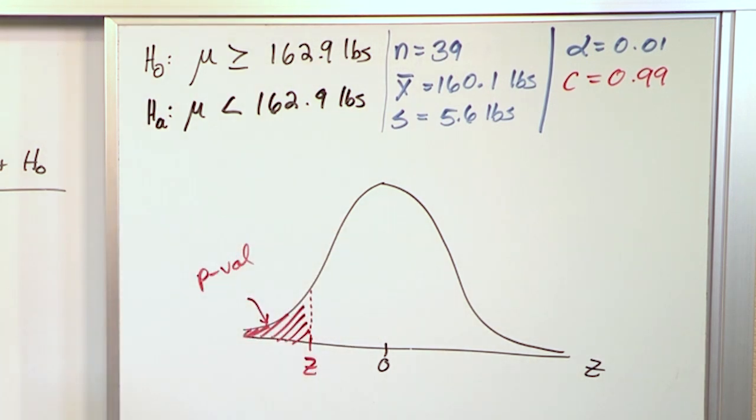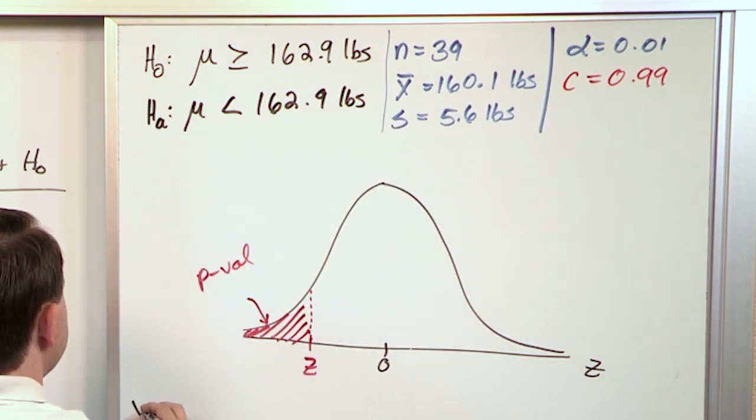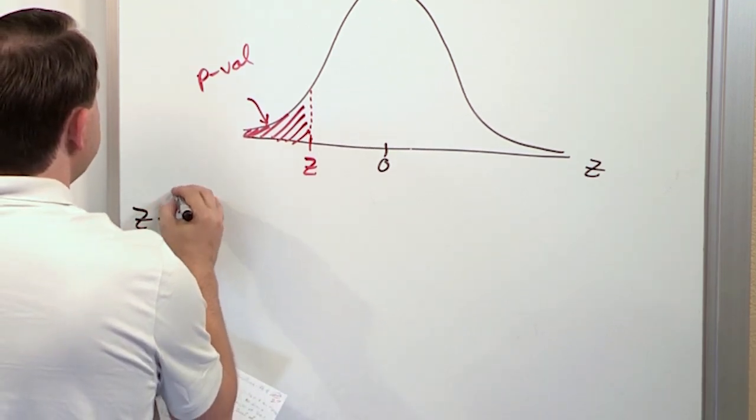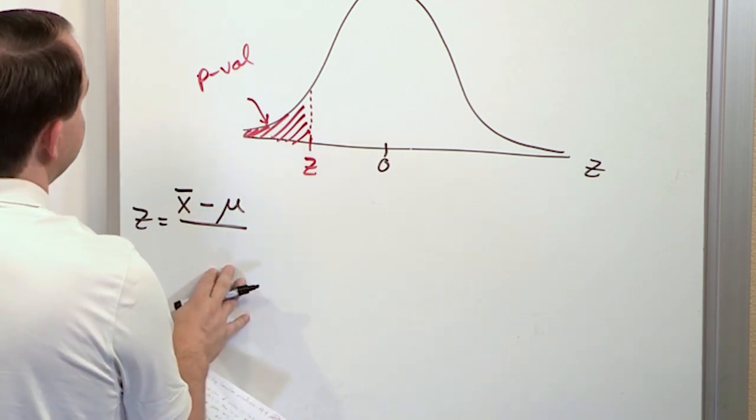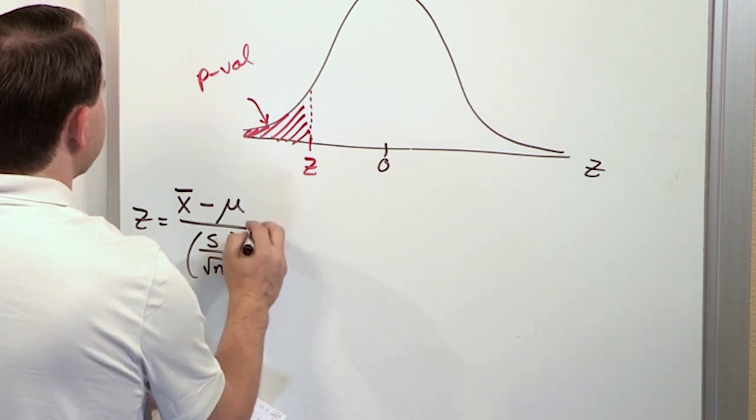So in order to do that, we have to find the test statistic. That comes from our data. The test statistic is going to be z, and it's just simply going to be the mean value of the data we collected minus the mean value of what the null hypothesis says, over the sample standard deviation square root of n, the number of samples.